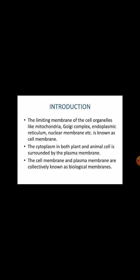What is plasma membrane? The limiting membrane of the cell organelles like mitochondria, Golgi complex, endoplasmic reticulum, and nuclear membrane is known as cell membrane. The cytoplasm that is present in both plant and animal cell is surrounded by the plasma membrane. The cell membrane and plasma membrane are collectively known as biological membranes.